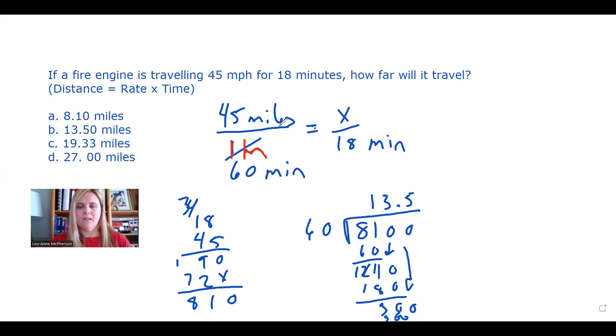So x is your distance that we need to determine over 18 minutes, which is provided. So now when we set it up this way, you can see that we have the problem, we've got hours and we have minutes, and we can't have that. We have to have the units to be the same on that line there.